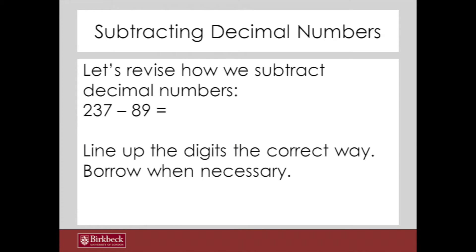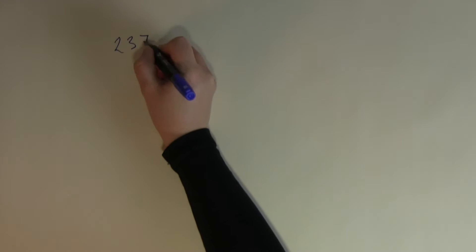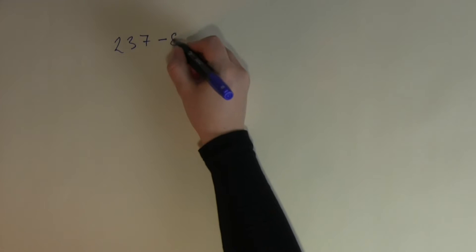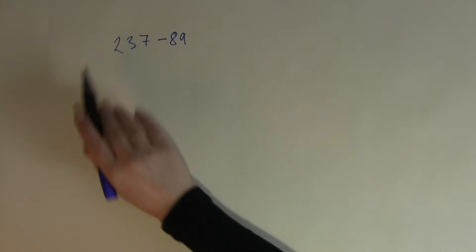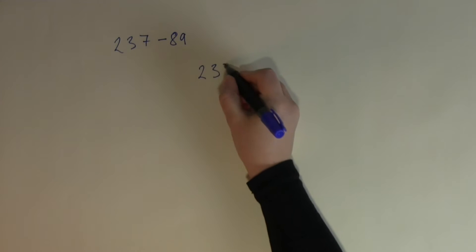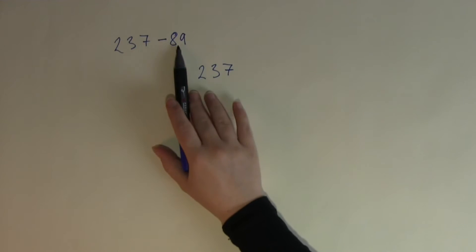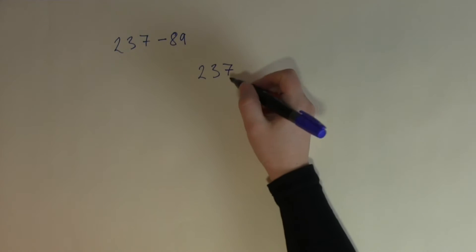So how do we subtract decimal numbers? Let's say you had to carry out the subtraction of 237 minus 89. First of all you need to line up the numbers in the correct way. The number that needs to be taken away from goes at the top and the number that is taken away goes at the bottom. It's very important that you line them up with the correct place values under each other, so units go under units. Therefore you are lining it up from the right.